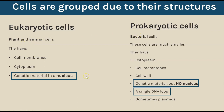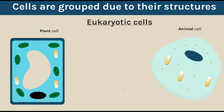If asked in an exam to point out a difference between these two types of cells, the best option would be to say that eukaryotic cells have a nucleus that contains genetic material, whereas prokaryotic cells do not have a nucleus and their genetic material is just a single loop found in the cytoplasm.